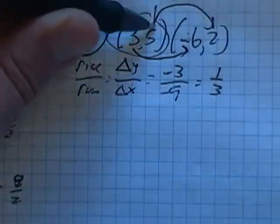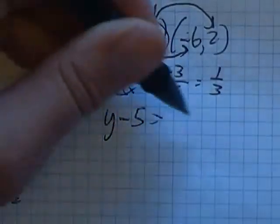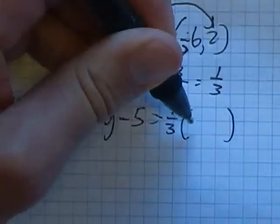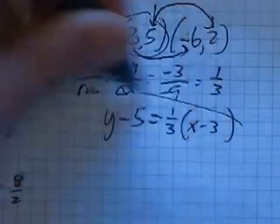Remember, point-slope is, I can go y minus 5, like if I plug in the 5 that makes this side a 0, times the slope, and then x minus 3, if I plug in the 3 that makes that a 0.